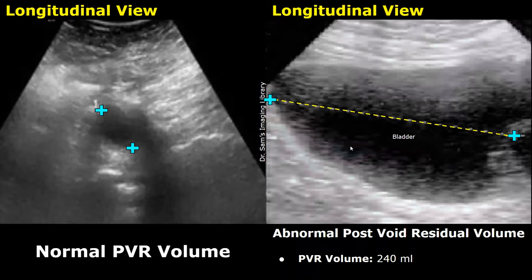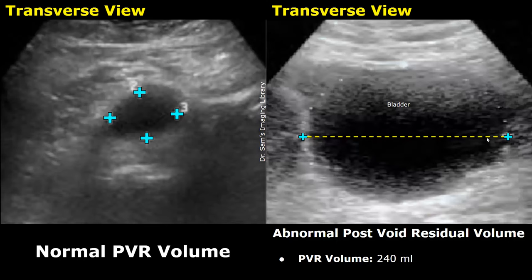This is another example showing an abnormal post-void residual volume. The bladder still appears filled with urine after urination, and the PVR volume was 240 milliliters. This image is in the transverse plane. We can still see a distended bladder despite urination. Comparing this with a normal bladder after urination, you can see a significant difference in size.